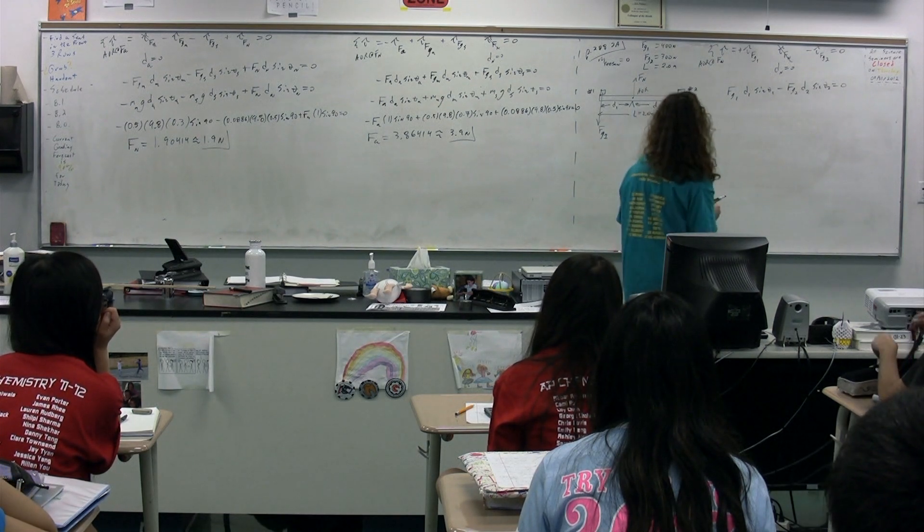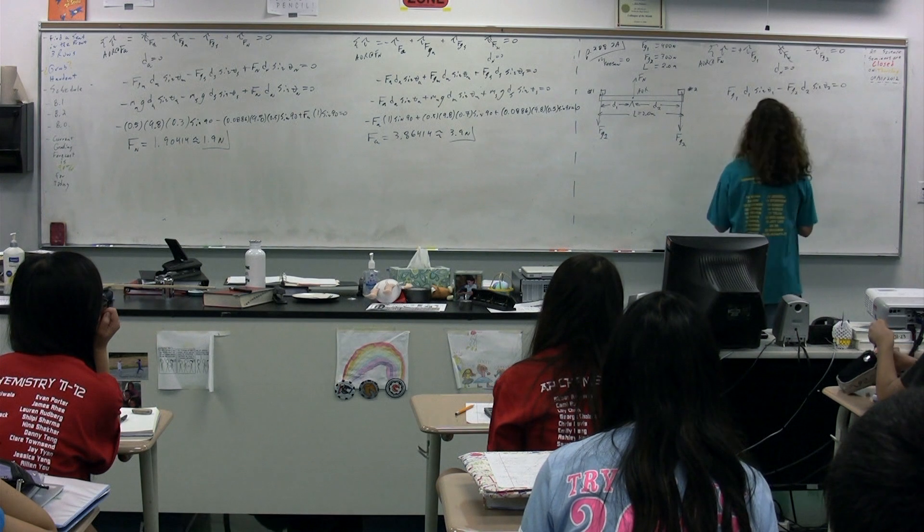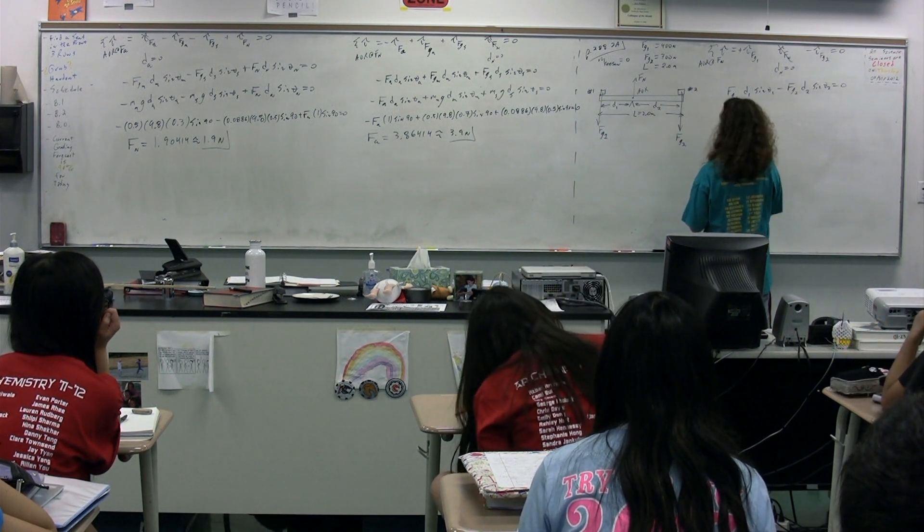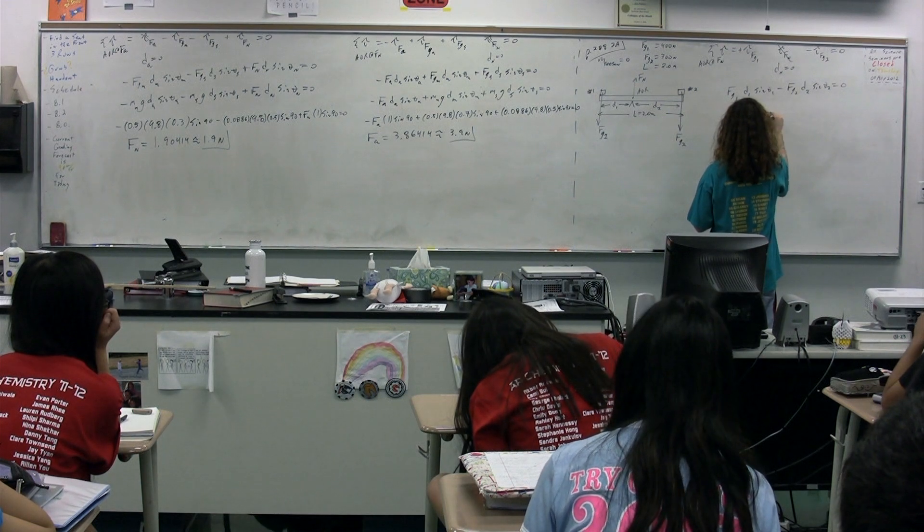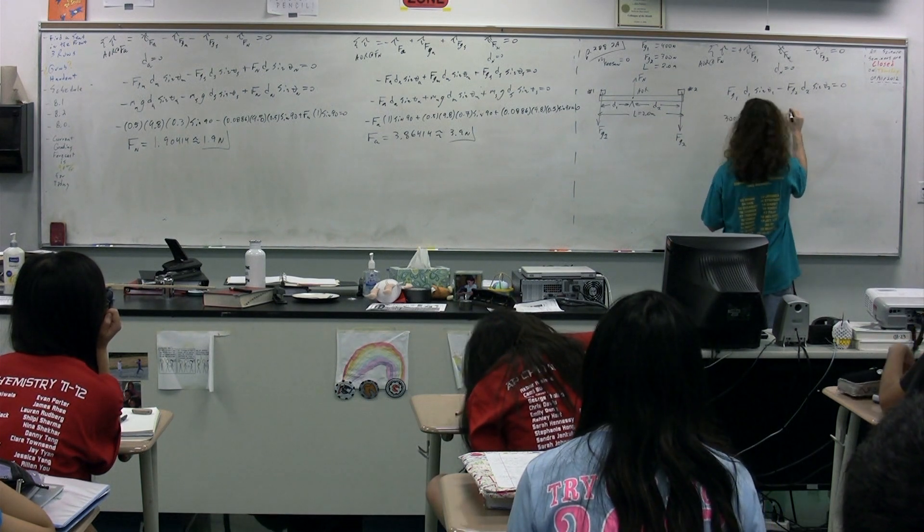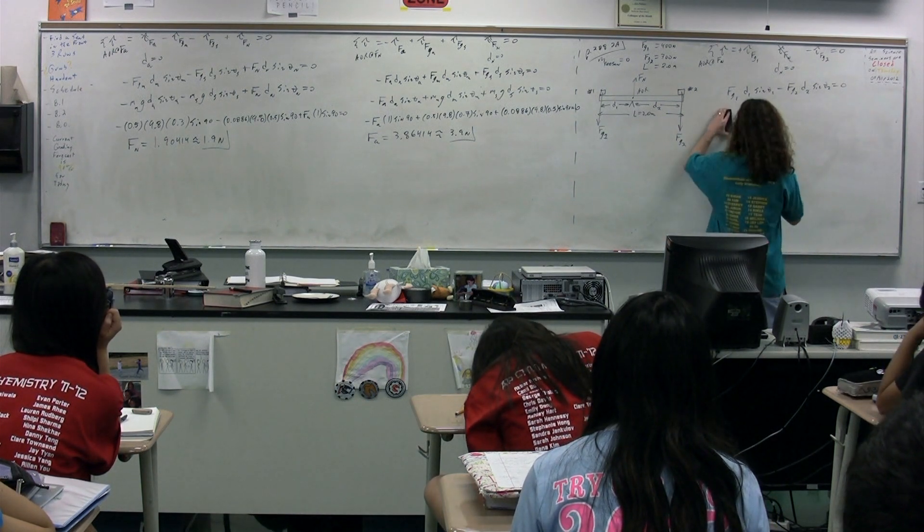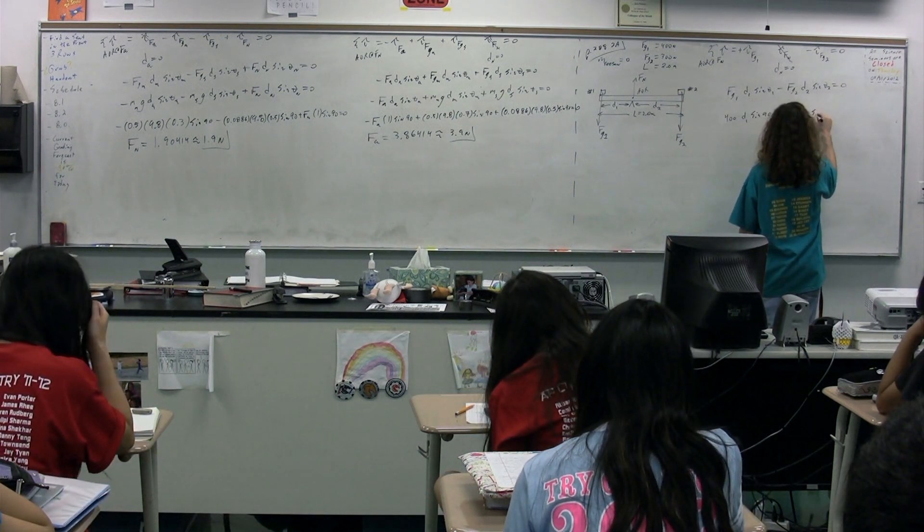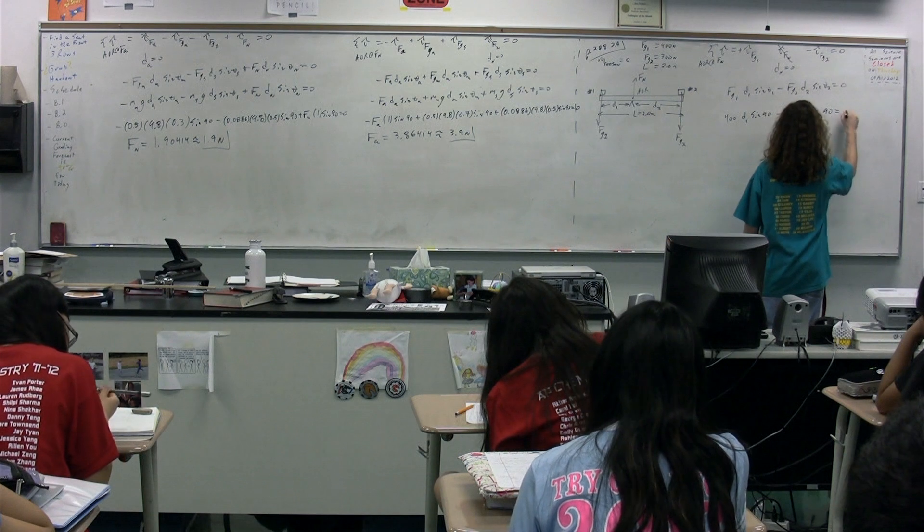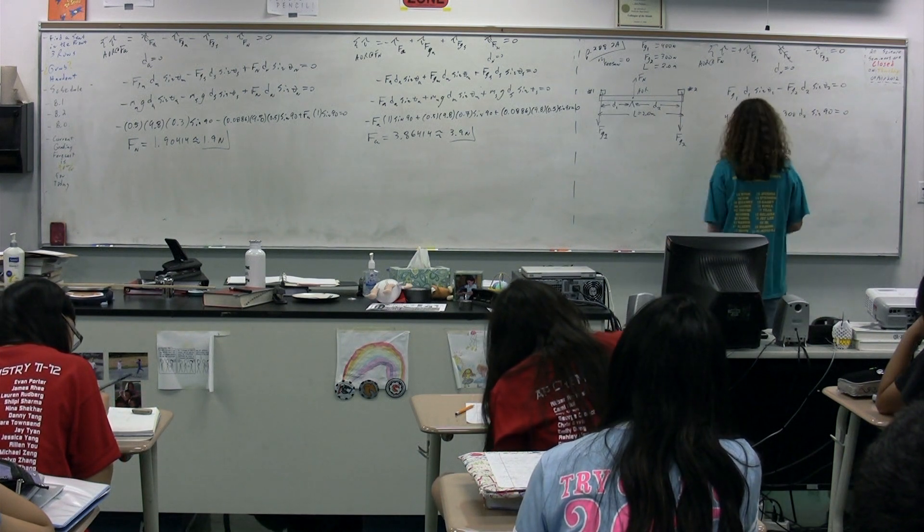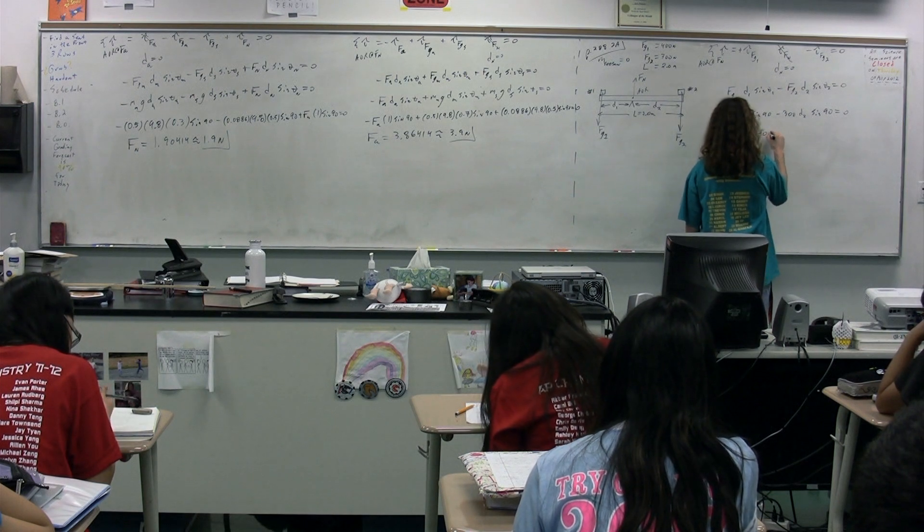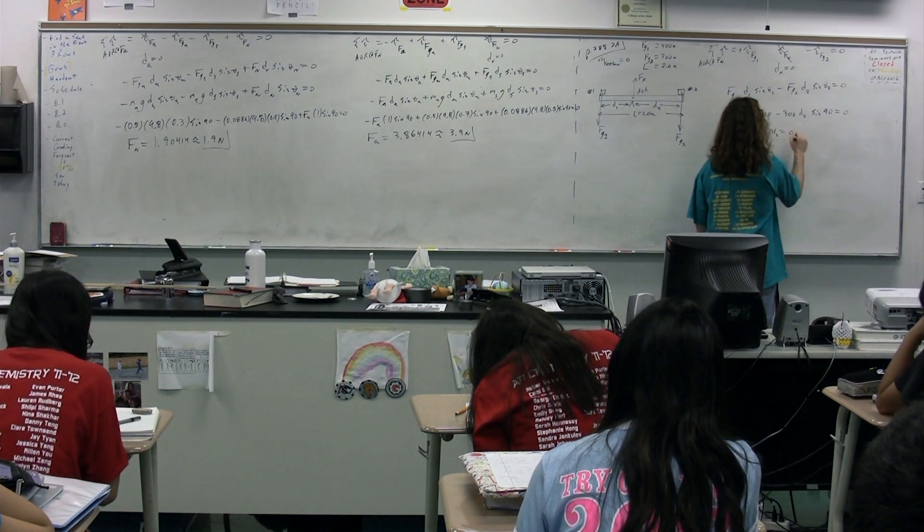So, here we go. Force of gravity one is 300. Lever arm one, we do not know, times the sine of 90 degrees, minus force of gravity two, which is, I got it reversed, 400. 300 times lever arm two times the sine of theta two, which is 90, which equals zero. 400 times D1 minus 300 times lever arm two equals zero.